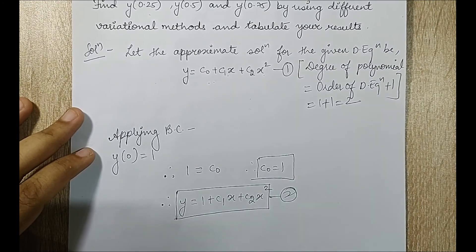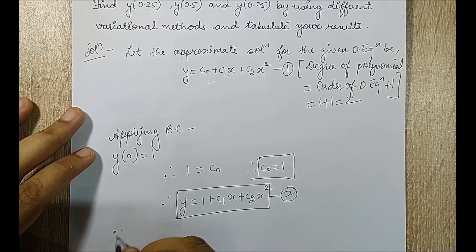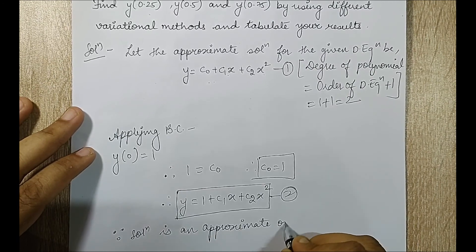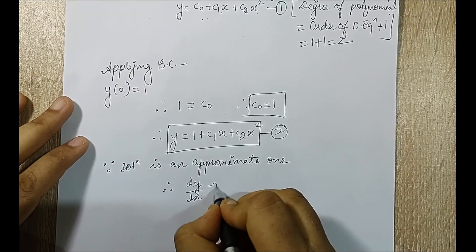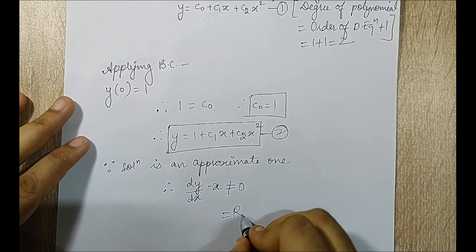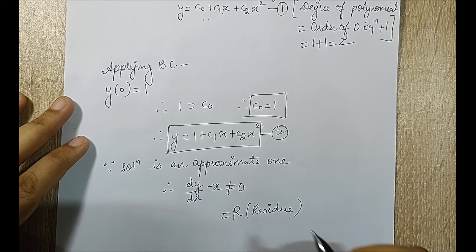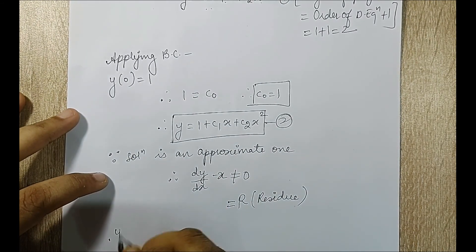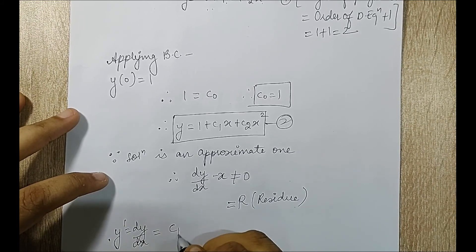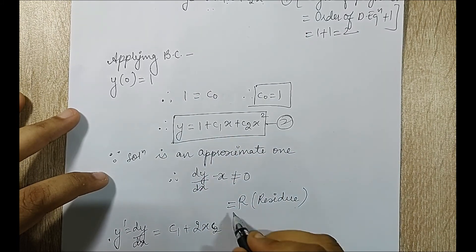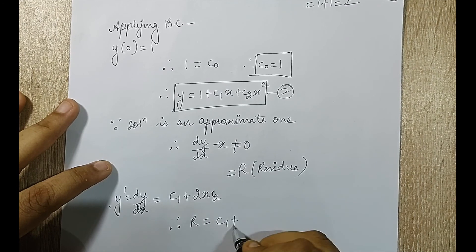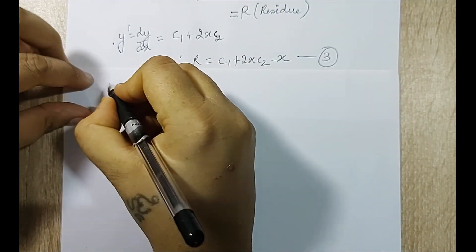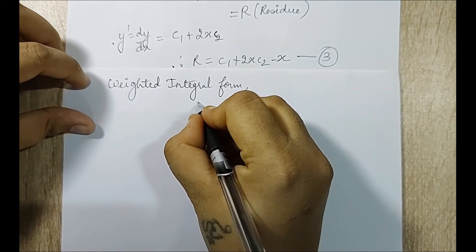Since the solution is an approximate one, therefore dy/dx - x will not be equal to 0 but will equal some term R, which is the residue. I can find the residue by finding the derivative of equation 2 and substituting. dy/dx = c1 + 2x*c2, so therefore R = c1 + 2x*c2 - x. This is equation 3, the residue R.